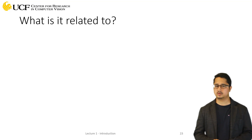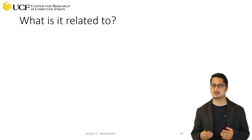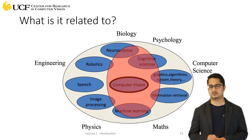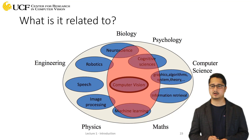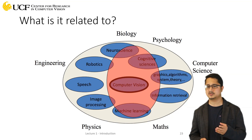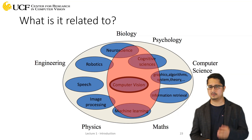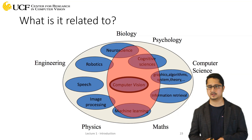Now before we go into the basics, let's first try to understand what are the other research areas which are relevant to computer vision. In the Venn diagram shown here you can see that computer vision is at the center and we have a lot of other areas coming from biology, computer science, mathematics, and physics.